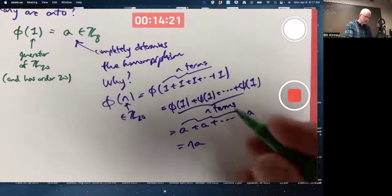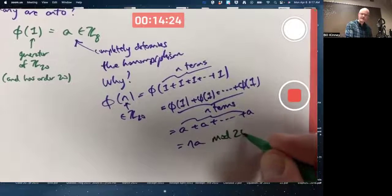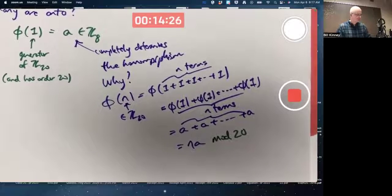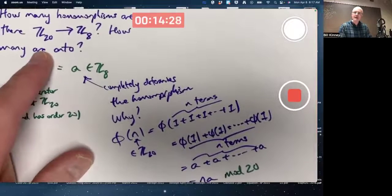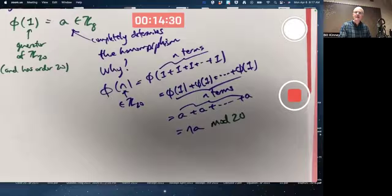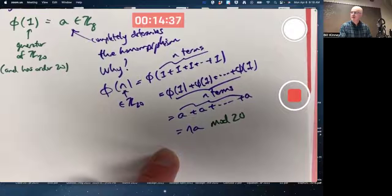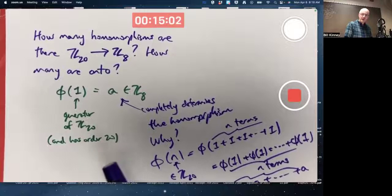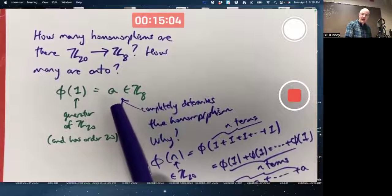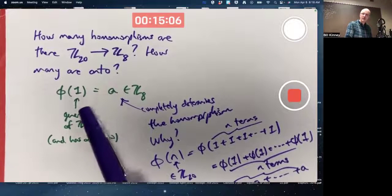Now you would have to do this mod 20 for this example, because our domain is Z20. But this is emphasizing that if you know what one gets mapped to, you know what everything gets mapped to. You can figure out everything else. By the theorem, we know the order of A has to divide the order of one.